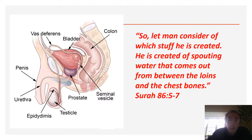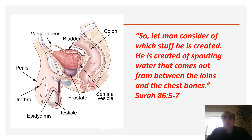We also read this in the Quran, Surah 86, verses 5 to 7: "So let man consider of what stuff he is created. He is created of spouting water that comes out from between the loins and the chest bones."